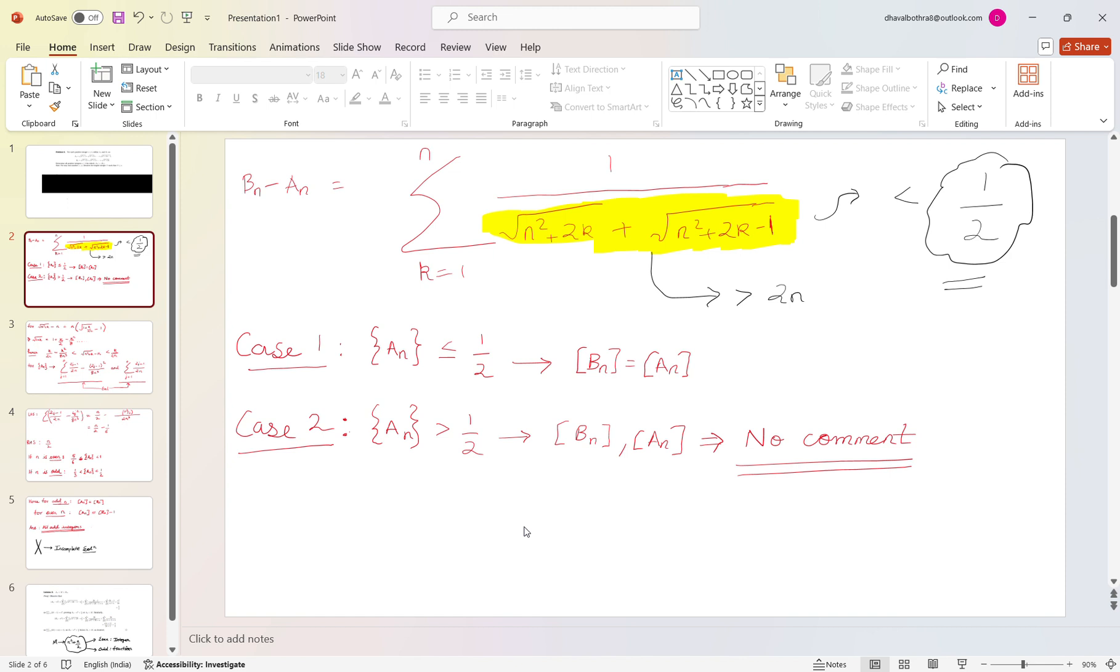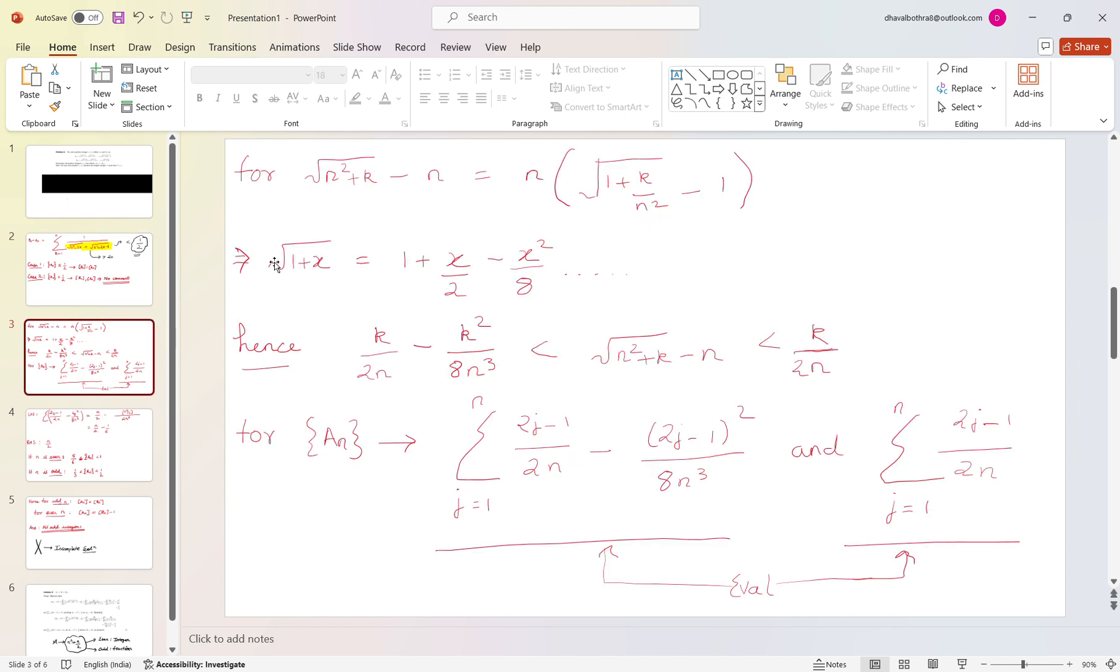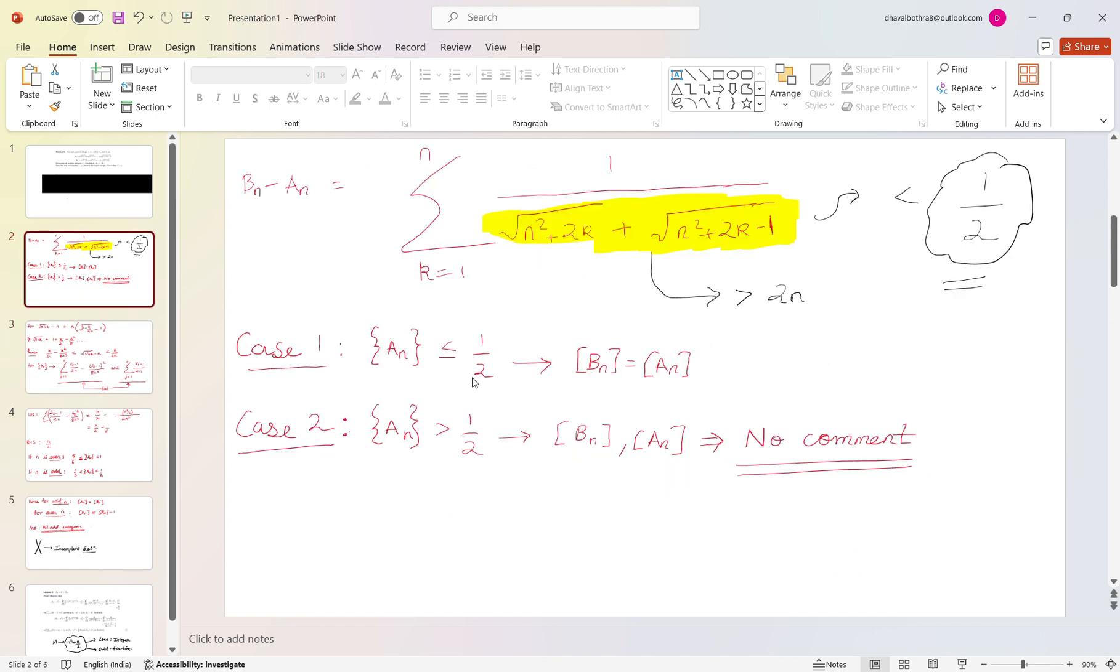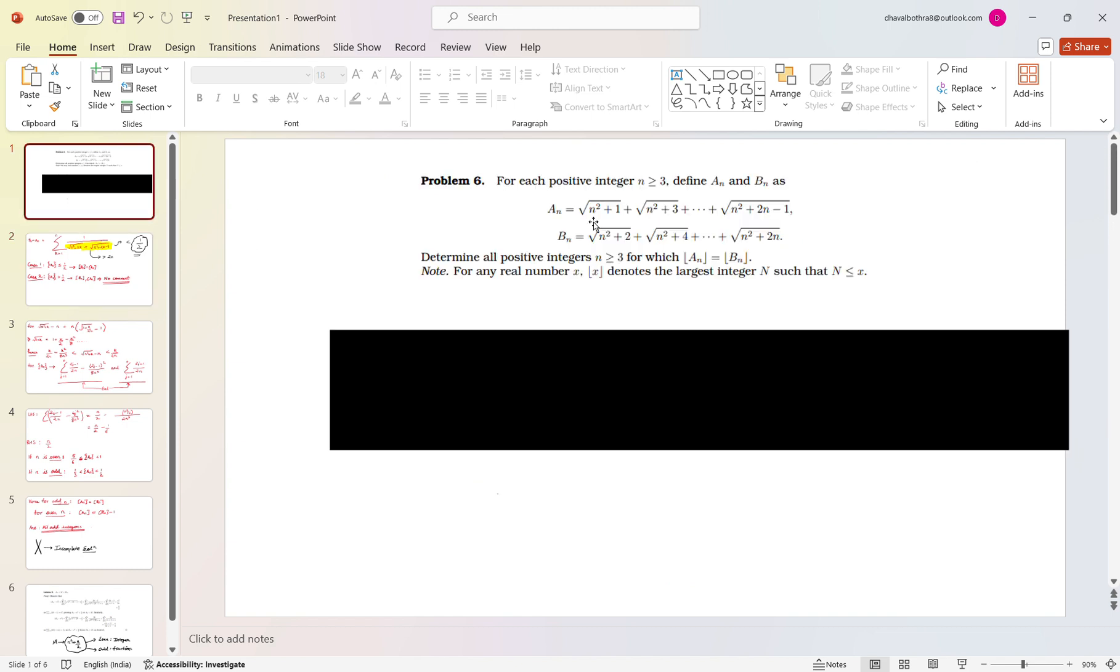Now what I had done further was take square root of n squared plus k minus n, just to find the fractional part of a_n. We know that in square root of n squared plus one, it will be n plus some fractional part. All these terms are greater than n and less than n plus one. You can see that b_n also has the highest term less than n plus one.